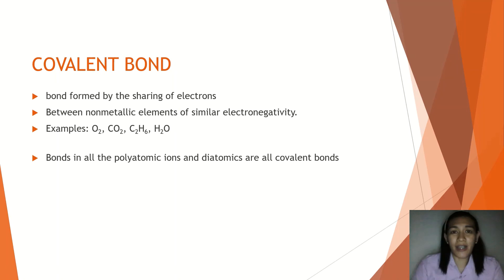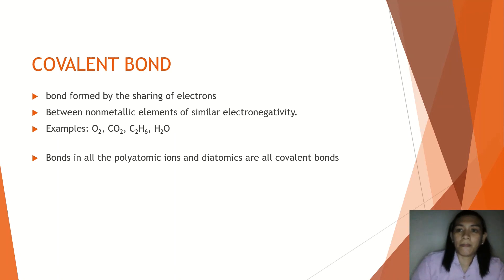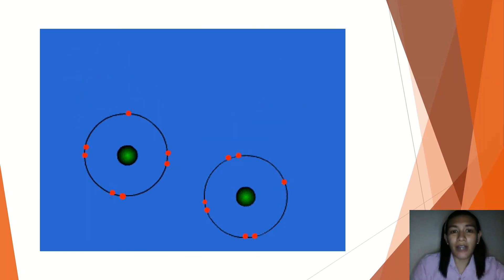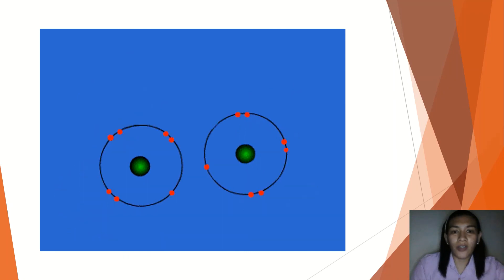Let's proceed to the second type of chemical bond — covalent bonds. Covalent bonds are bonds formed by the sharing of electrons. This occurs between non-metallic elements of similar electronegativity. Examples include oxygen, carbon dioxide, and others. Bonds in all polyatomic ions and diatomics are covalent bonds. Here is an animation of how covalent bonds are formed — you can see the sharing of electrons.